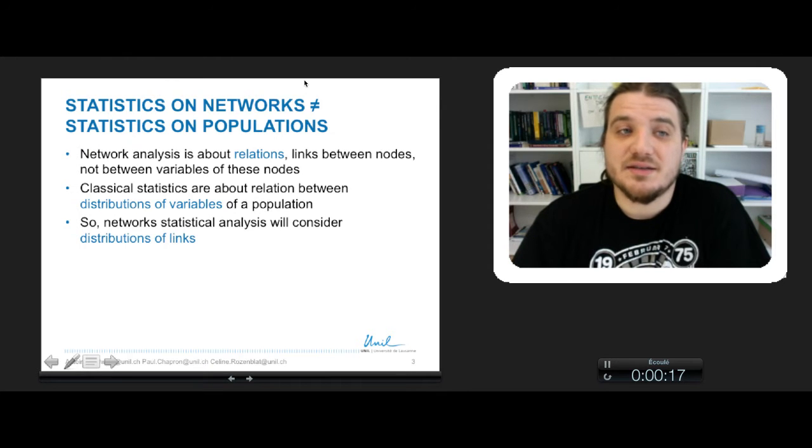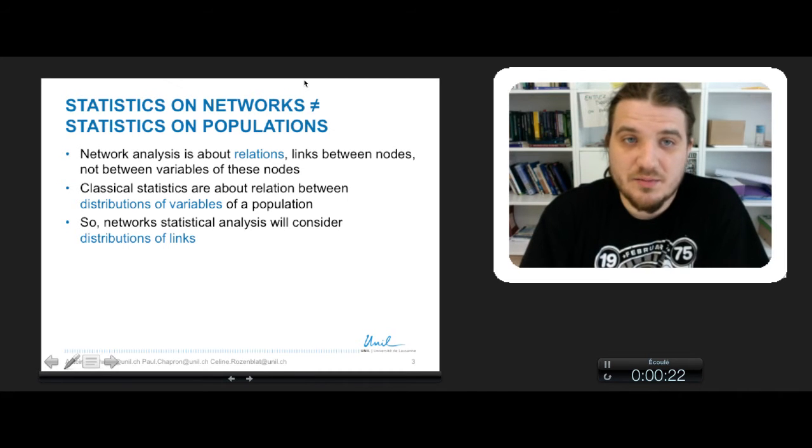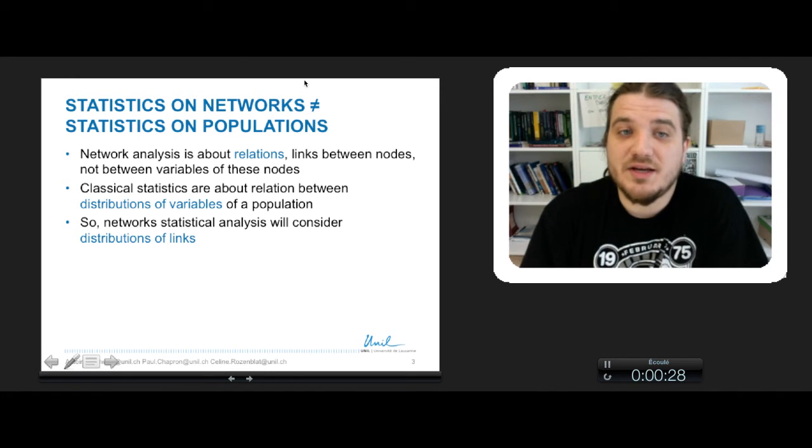First, statistics on networks and statistics on population differs because networks is about relation between nodes and not between variables of these nodes, whereas the classical statistics are about relation between the variables on the population.